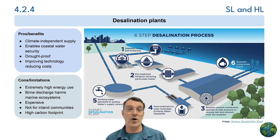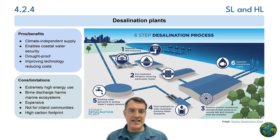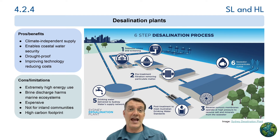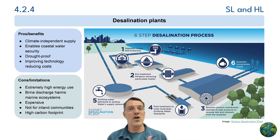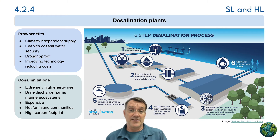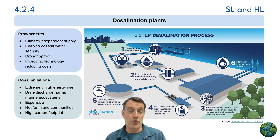Desalination offers a climate-independent water supply option, particularly valuable for coastal regions that experience freshwater scarcity. Plants like this one remove salt from seawater, creating a reliable drinking water source regardless of rainfall patterns. Major benefits include drought resistance and enhanced coastal water security. However, there are significant drawbacks: extremely high energy consumption, marine ecosystem damage from brine discharge — the highly concentrated salt water that results from the desalination process — high costs, and a substantial carbon footprint unless powered by renewable energy. As technology improves and costs come down, desalination is becoming more viable for water-stressed coastal regions.